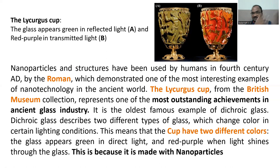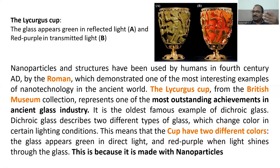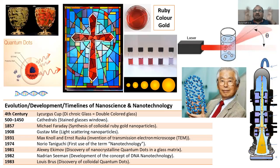This is the history, whatever I have explained — the same thing. It was the most outstanding achievement in the ancient glass industry. Ancient people were very intelligent. They knew the importance of nanotechnology and nanoparticles in those days, not just now. You can write this topic in the examination with explanation. My notes are available in my app. First event: fourth century — Lycurgus Cup, dichroic glass, double-colored glass — because it is made up of nanoparticles, that's why it looks like double color.